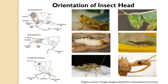The orientation of the head with respect to the rest of the body varies in insects. The gnathal appendages collectively, along with the labrum and hypopharynx, constitute a well-elaborated feeding apparatus. The position of mouthparts in relation to the body axis differs in different groups of insects. The orientation of the insect head is of three types.